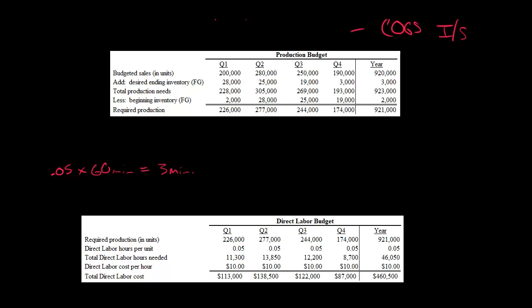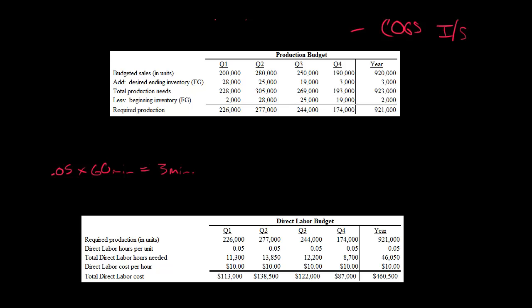For quarter two, we again go to the required production from our production budget. We're going to produce 277,000 bottles of orange juice in quarter two. We again assume 0.05 direct labor hours per unit. Multiplying 277,000 by 0.05 gives us 13,850 direct labor hours in the second quarter. Multiplying that by $10 an hour gives us $138,500.